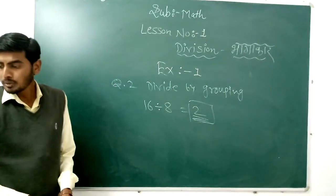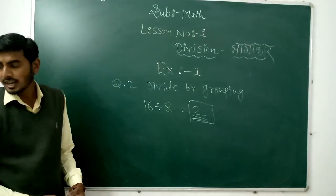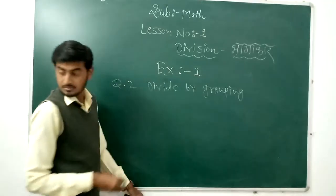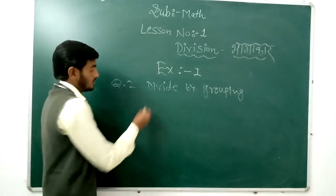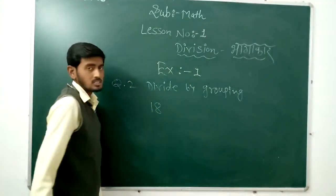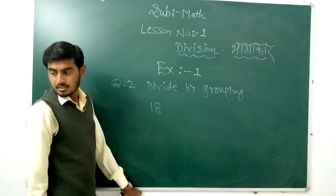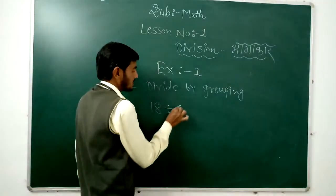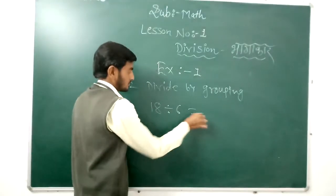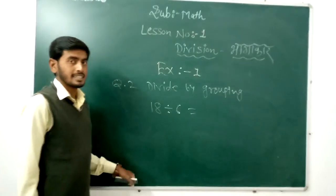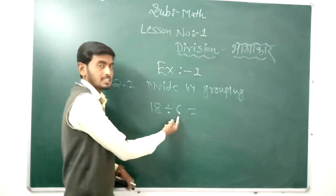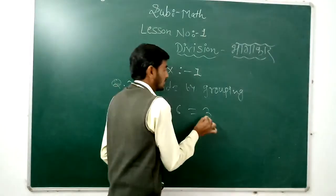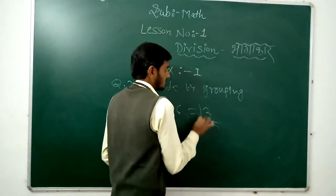Next: how many groups of 6 oranges are there in 18? Total oranges: 18. Make groups of 6 — simply divide by 6. Read the table of 6: 6 ones are 6, 6 twos are 12, 6 threes are 18. So 3 groups. Our answer is 3.